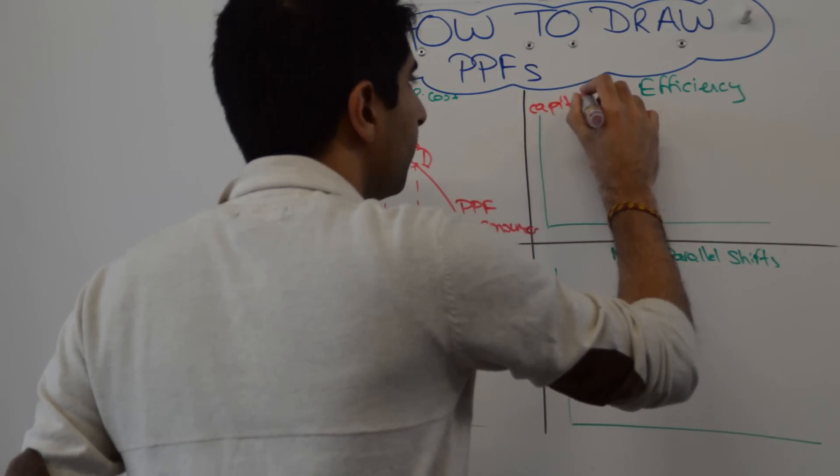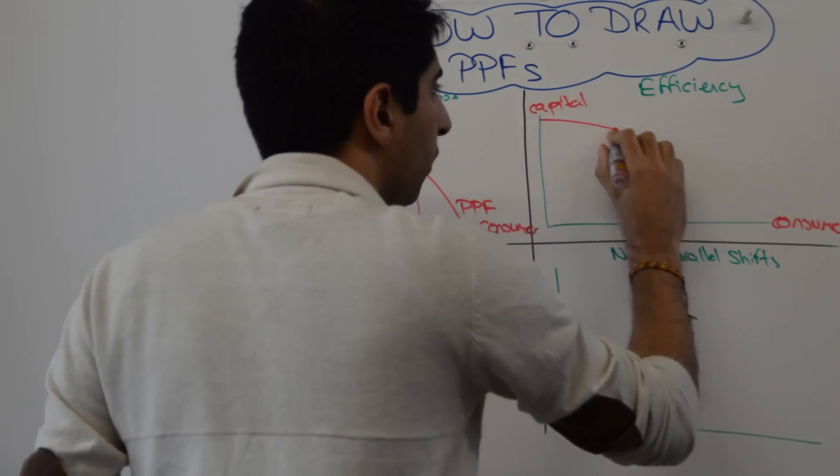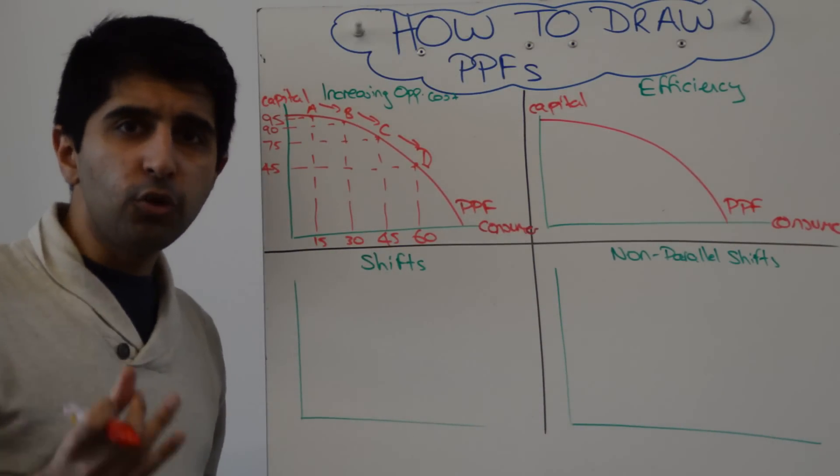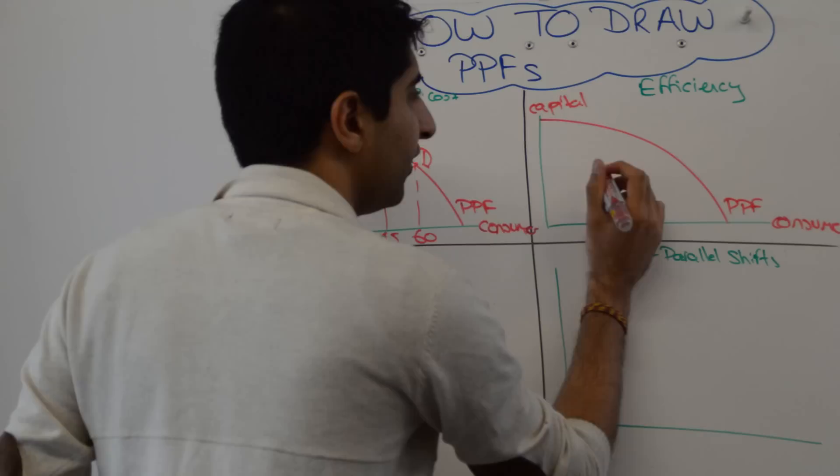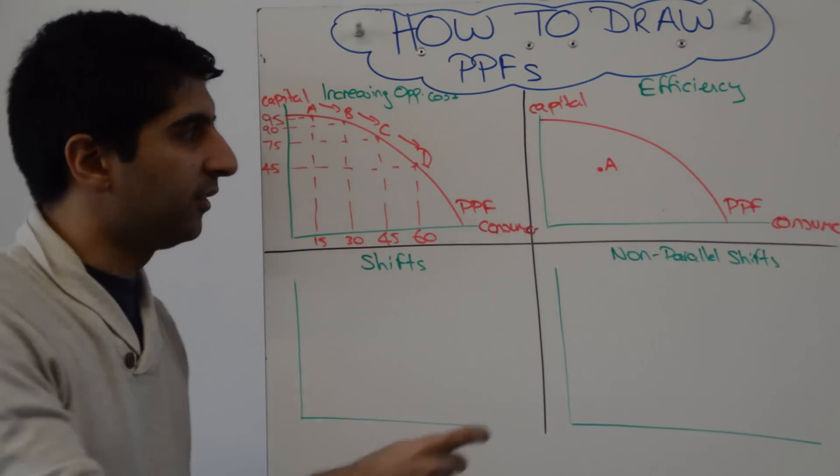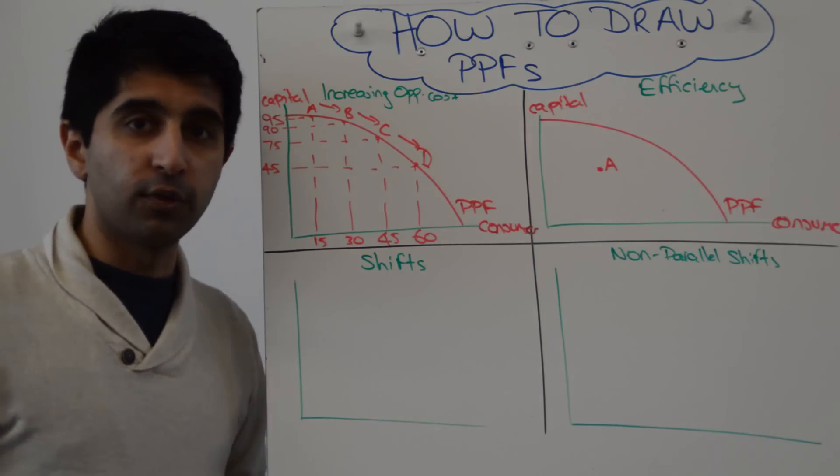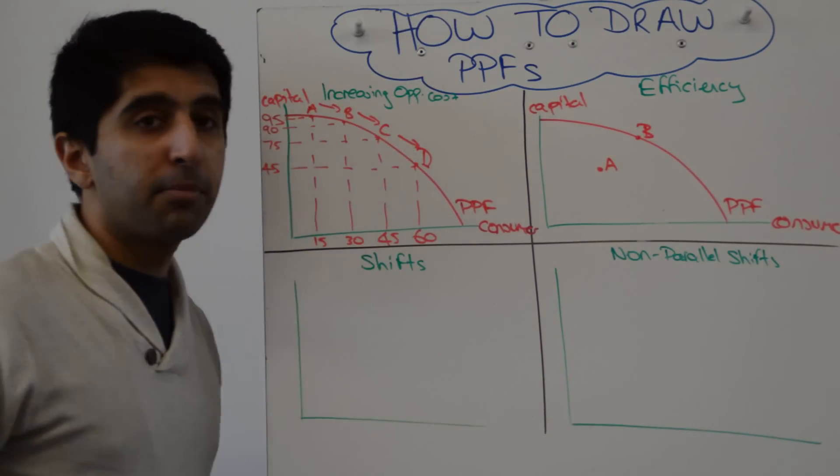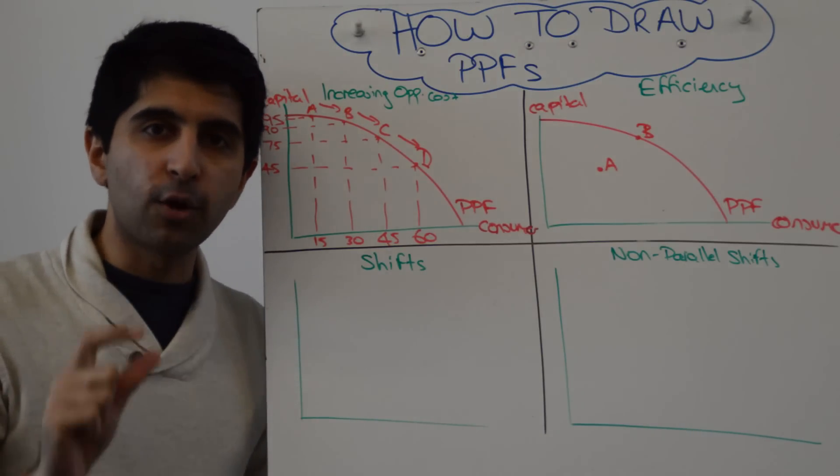You might be asked to show efficiency. There aren't many efficiencies we can actually show on a PPF, but there are some important ones. Same labelling: capital and consumer. We'll draw our concave PPF and label it. We can show two definite efficiencies: productive efficiency and productive inefficiency. If I take point A, any point inside the PPF is productive inefficiency - not maximising the use of scarce resources in the economy. Whereas any point on the curve, by definition, must be productive efficiency. Point B is productive efficiency. Point B is also Pareto efficiency.